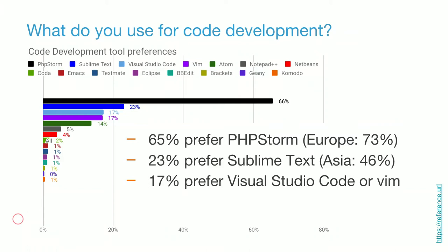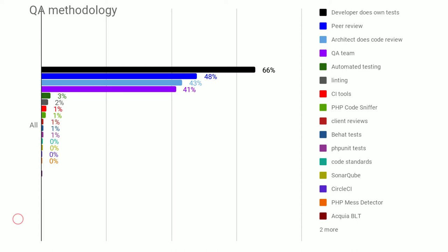QA methodology: this is the first of a couple questions where we allowed open answers. The number one answer is "developer does own tests," far and away — overwhelmingly popular across the board. The next group down is peer review, the architect does code review, or relying on a QA team. Asia is much higher than the rest on those categories. The fill-in-the-blank answers run the gamut: automated testing and linting at the top, continuous integration tools, PHP Code Sniffer, client reviews — so you're letting your customer do your QA.